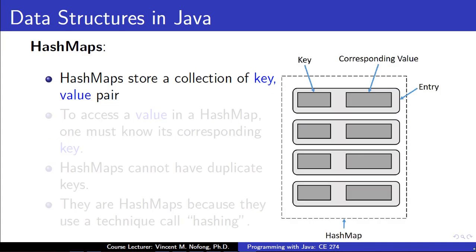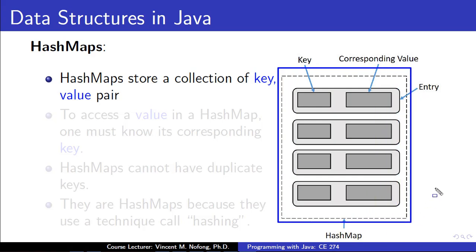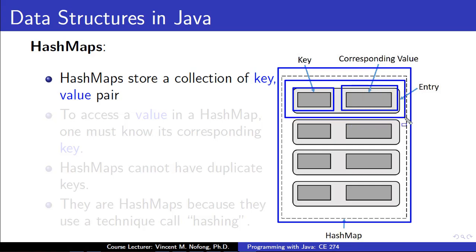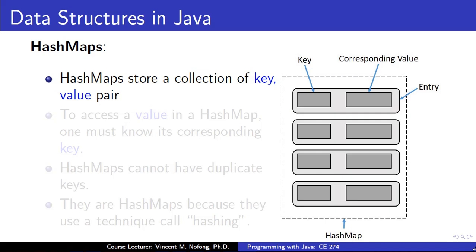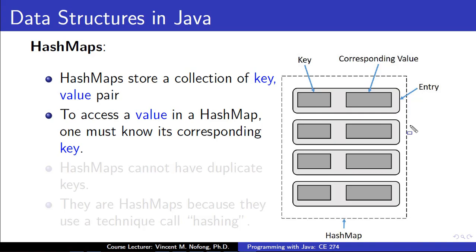As we can see on the slide, this is how the HashMap — which will be the focus of this class — is structured. Inside the HashMap we have a key and its corresponding value stored together, and the two form what is referred to as an entry. The HashMap stores collections of objects using the key-value pair. If we want to access a particular value in the HashMap, we access it using its key. If we do not know the key, we would not be able to access the value. HashMap keys cannot be duplicated; the values however can be duplicated, but the keys are always unique.